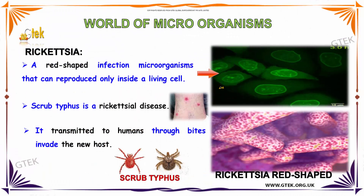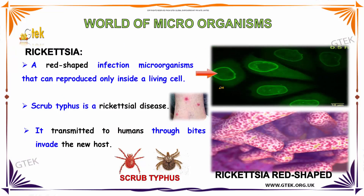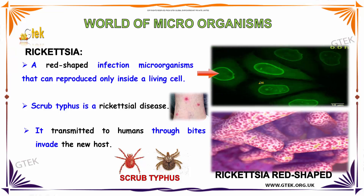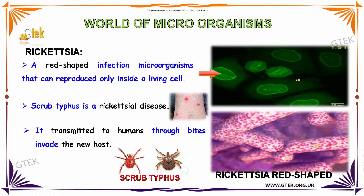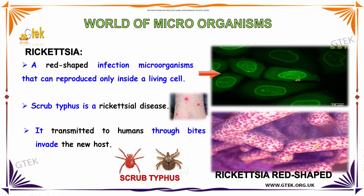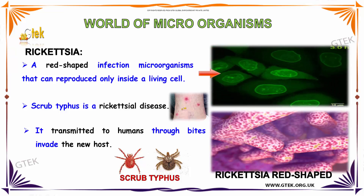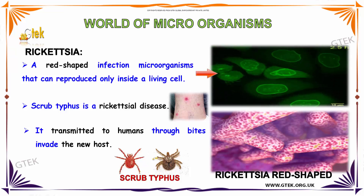Let us talk about rickettsia. It is a rod-shaped infectious micro-organism that can be reproduced only inside a living cell. You can see rickettsia over here. Scrub typhus is a rickettsial disease. It is transmitted to humans through bites and invades the new host.